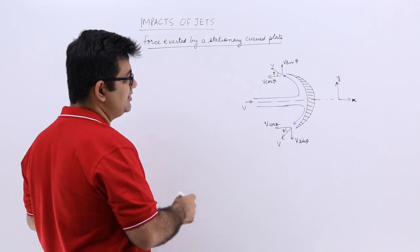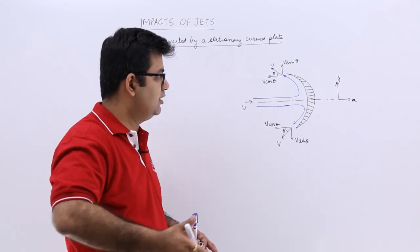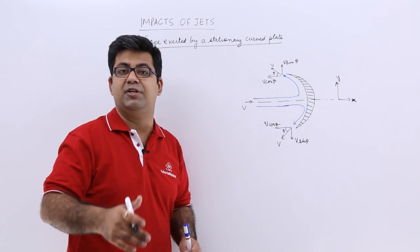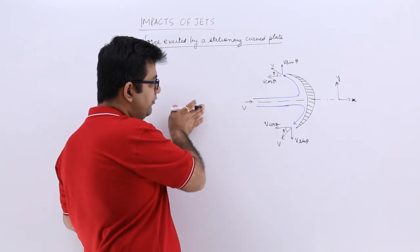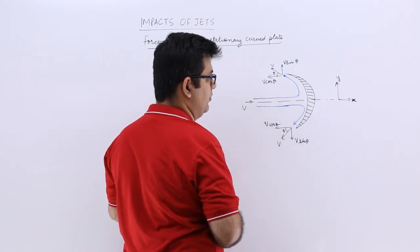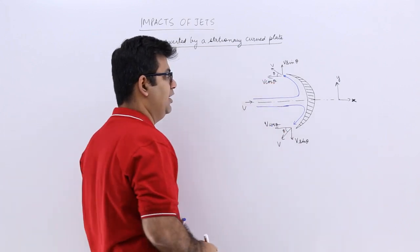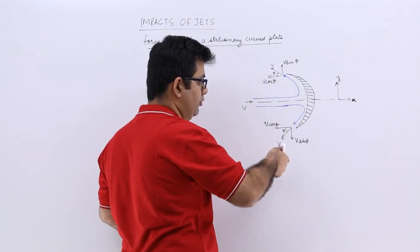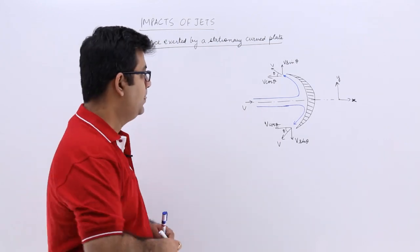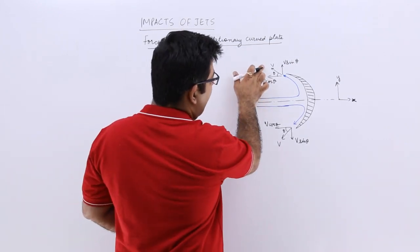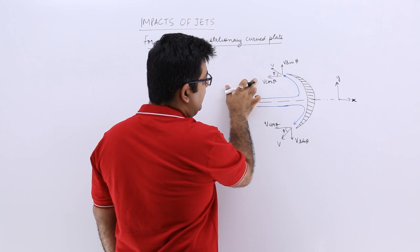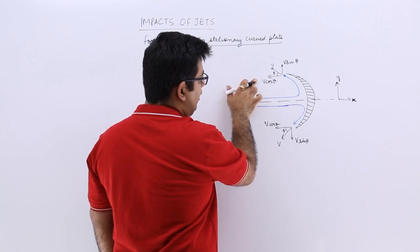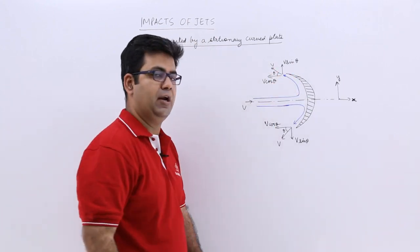Now let us assume that the curved blade or this curved plate has no friction on its surface. So whatever velocity the water strikes it with, the same velocity of the jet comes out in a direction which is tangential to the curved plate. Now this will have two components, one in the cos theta or in the horizontal direction and the other is the vertical direction.